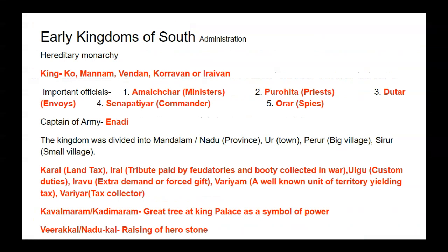Regarding the administration of the southern kingdoms, the monarchy was hereditary. The king was known as Ko, Manaman, Manna, Vendam, Koravan or Iraivan. The important officials of the kingdom were Amai Char (Minister), Purohit (Priest), Dutar (Envoy), Senapatiyar (Commander) and Oran (Spies). The captain of the army was known as Enadi.